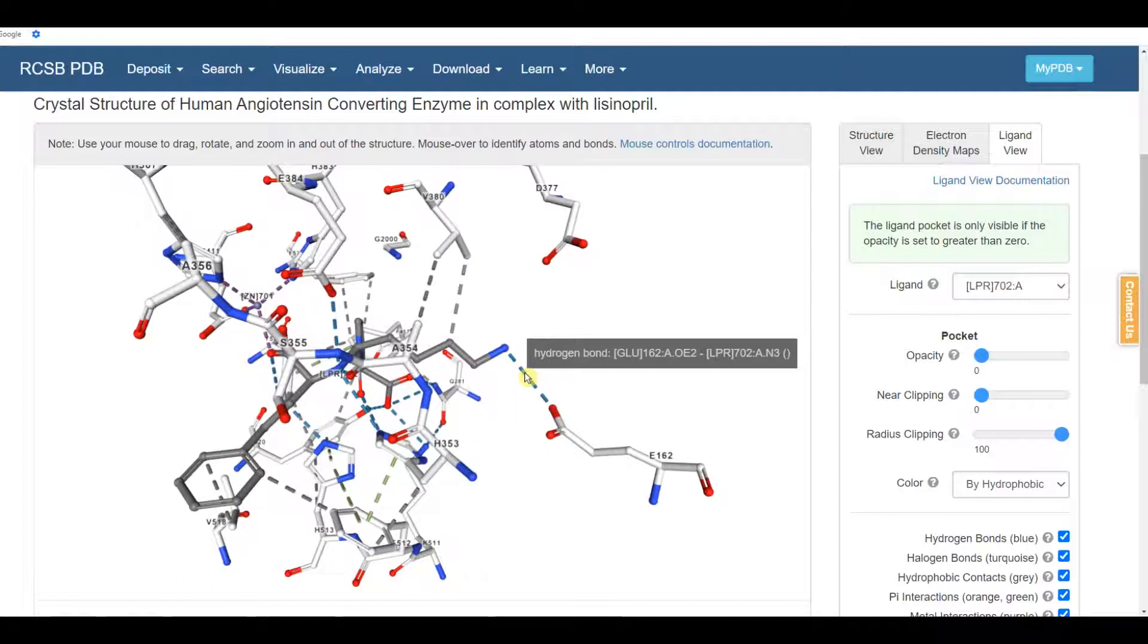That's a hydrogen bond between glutamate, a glutamic acid residue in the protein, and lisinopril, and nitrogen on the lisinopril. Notice that nitrogen atoms are shown in blue and oxygens are in red.